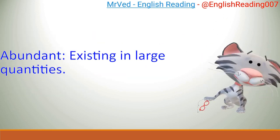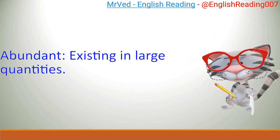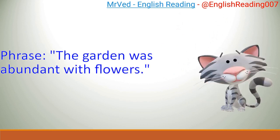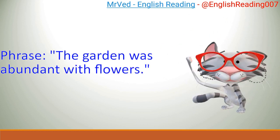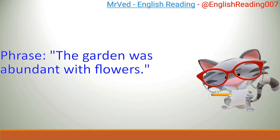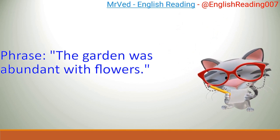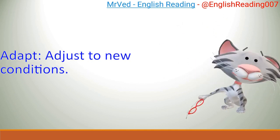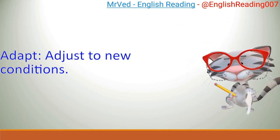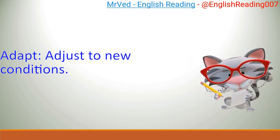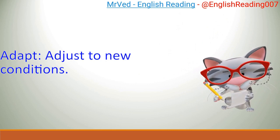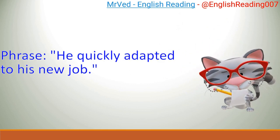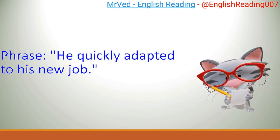Abundant: existing in large quantities. Example: The garden was abundant with flowers. Adapt: adjust to new conditions. Example: He quickly adapted to his new job.